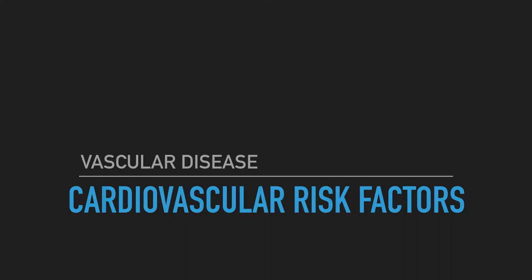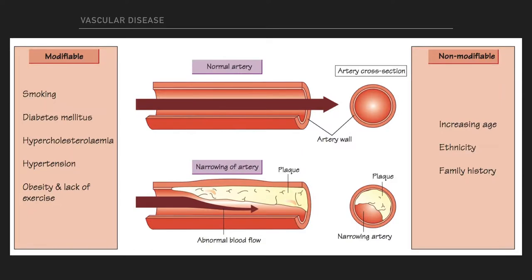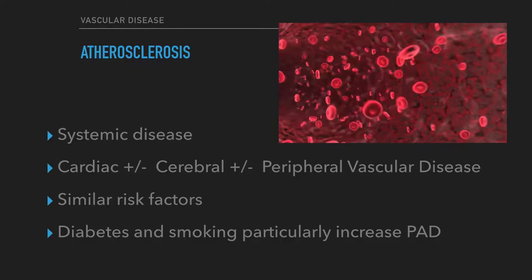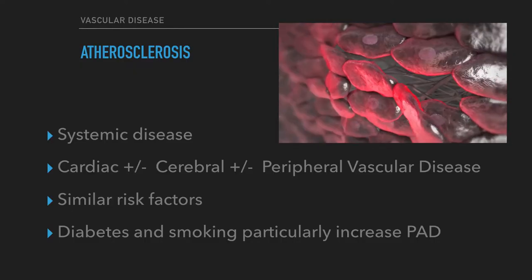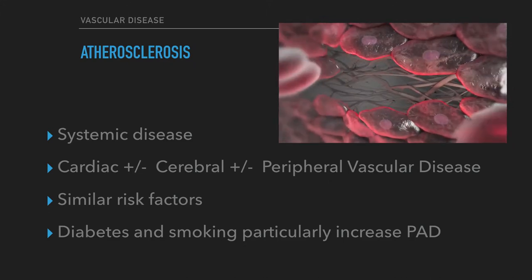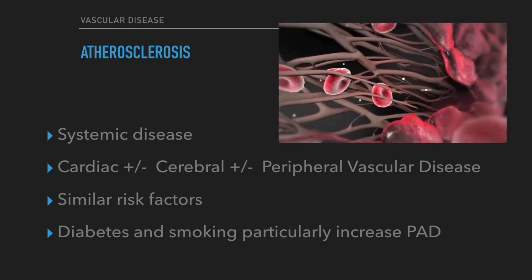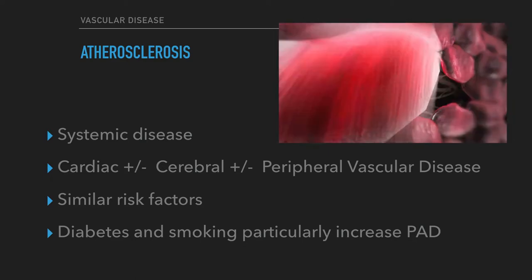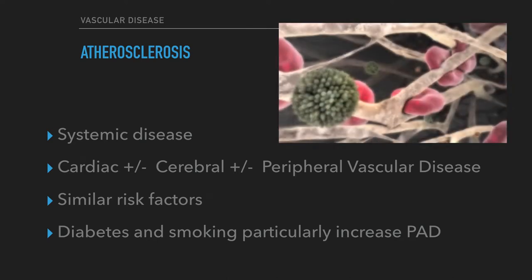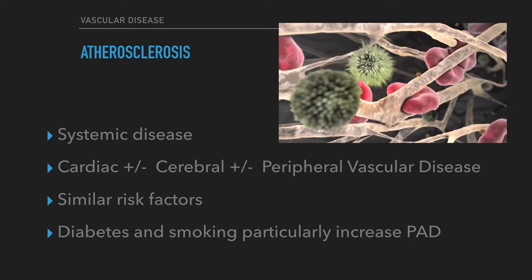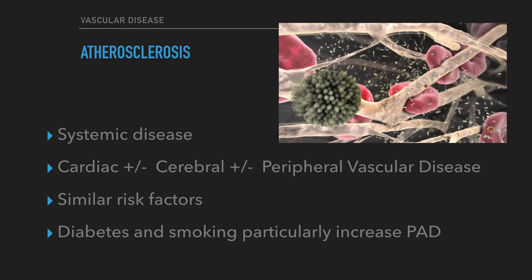There are a number of well-known cardiovascular risk factors that are best divided into modifiable and non-modifiable. Atherosclerosis is a systemic disease; a patient is unlikely to have isolated cardiovascular, cerebrovascular, or peripheral vascular disease. The risk factors are the same regardless of the vascular territory, although there is some evidence to suggest that diabetes and smoking particularly increase the risk in the lower limbs.